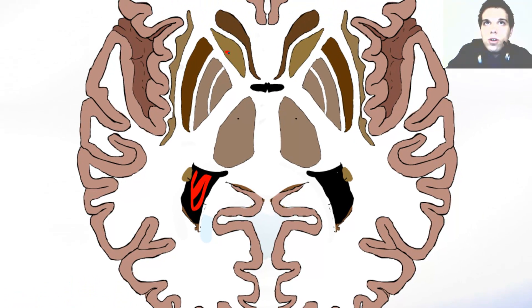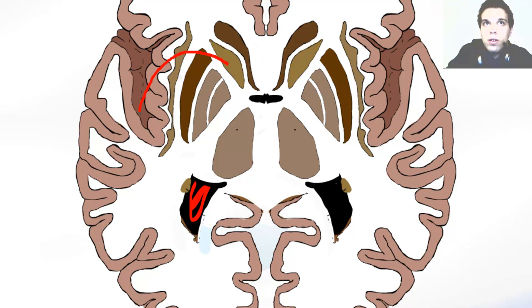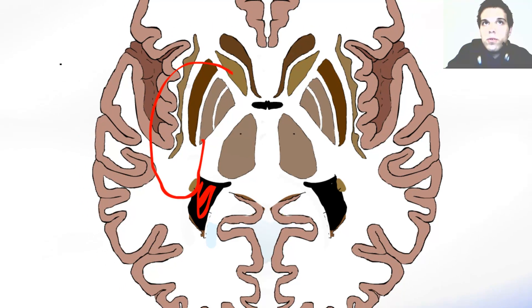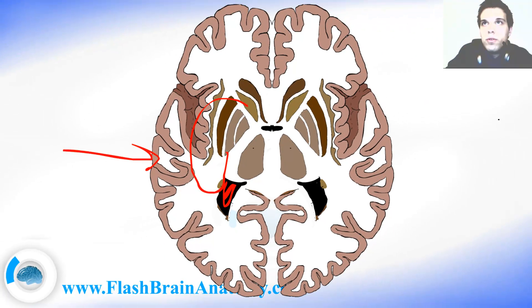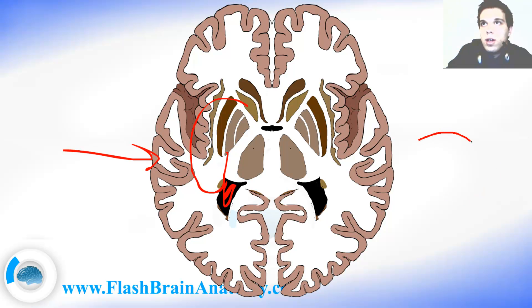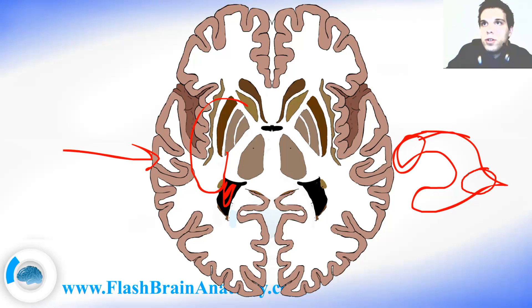The caudate nucleus goes like this — it goes more cranial, and then goes again caudal. So, kind of like if we look at it from the lateral point of view, it curves like this — just like the lateral ventricle. The lateral ventricle also has the same curvature, with its anterior horn, posterior horn, inferior horn, and the body.